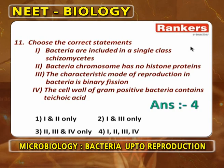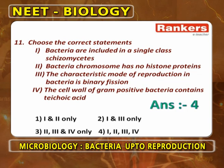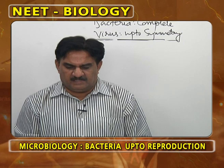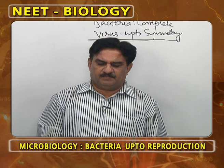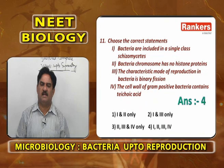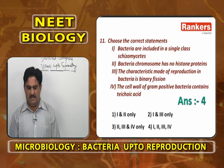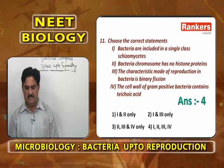Choose the correct statements: Bacteria are included in a single class called Schizomycetes because their main method of reproduction is binary fission. The bacterial chromosome has no histone protein — bacterial chromosome is circular and shows no histone protein. The characteristic mode of reproduction in bacteria is binary fission. The cell wall of gram positive bacteria contains techoic acid. All statements are correct — answer is option 4.